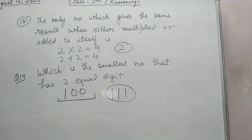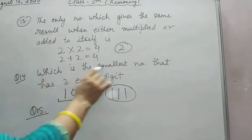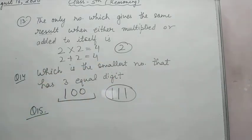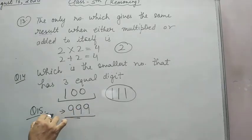Question 15: Which is the largest number with equal digits? That is 999. This is your largest three-digit number which has equal digits.